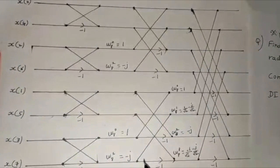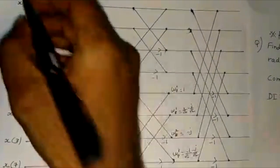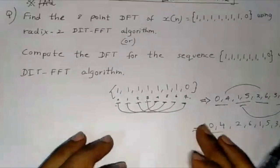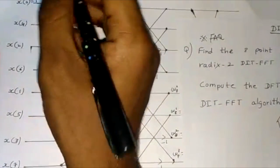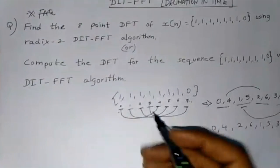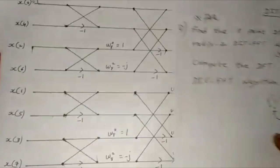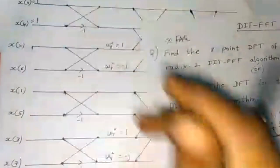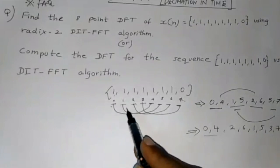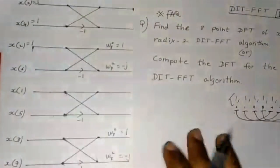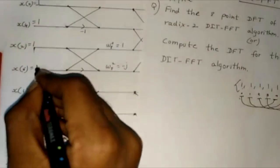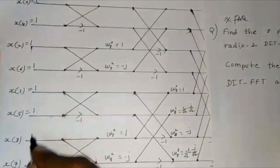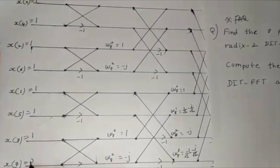Now we have to pass the values. The value of x(0) as given in the question is 1. So x(0) = 1, x(4) = 1, x(2) = 1, and all the values are 1 except x(7), which is 0. So the inputs are 1, 1, 1, 1, 1, 1, 1, and x(7) = 0.